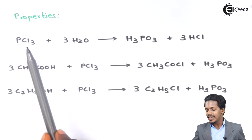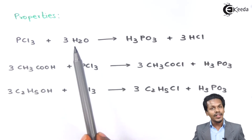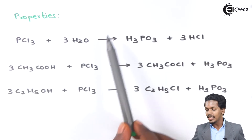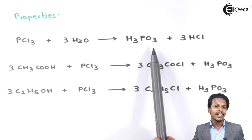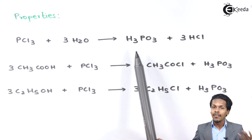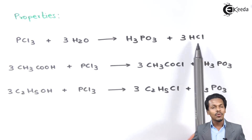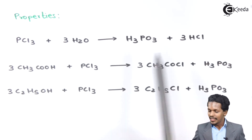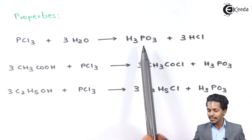Whenever PCl3 is reacted with water — 3 moles of H2O — the product we could get is H3PO3, that is known as phosphorus acid, along with 3 moles of HCl. So this is a method to prepare phosphorus acid.